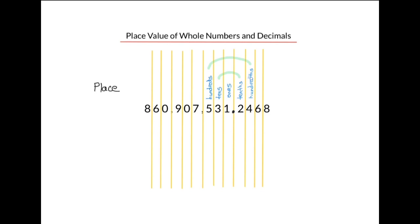Now you might be asking: why is there no ones column to the right of the decimal? To understand that, we need to look at the value of the digits in the number. To get the value of the digit in the ones column, we multiply by one. In the tens column, by ten. In the hundreds column, by a hundred. On the other side of the decimal, we do the opposite: to get the value of the tenths digit, we divide by ten, and the hundredths digit, we divide by a hundred.